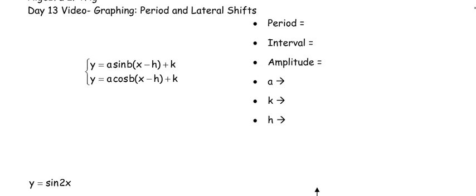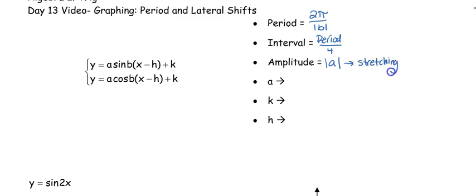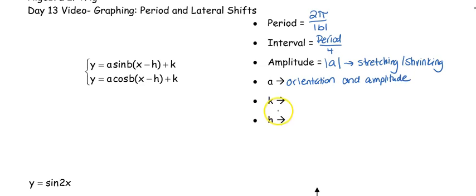As a reminder of all our information: the period, the length of one cycle, is found by doing 2π divided by the absolute value of b, and the interval is how much each tick mark is — you're always going to break whatever that period is into four equal pieces. The amplitude does our stretching and shrinking, and it's also going to cause us to reflect. The a value determines the orientation — whether or not it's reflected — and the amplitude of your graph. The k value is the vertical shift, and the h value is the horizontal shift.